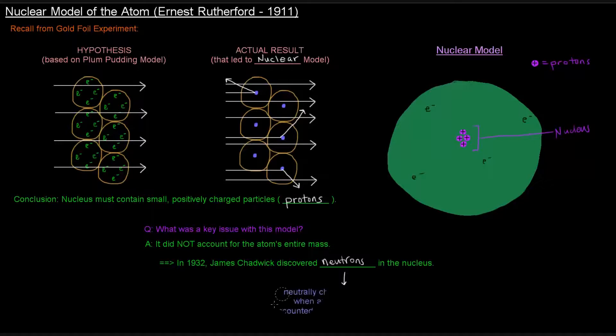Neutrons are neutrally charged particles that when added to this model accounted for the atom's entire mass, as well as impacts why the nucleus can even exist with protons hanging out inside of it, because these positively charged particles would likely repel, but neutrons being there kind of helps with that.